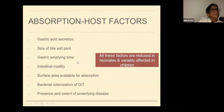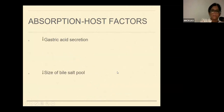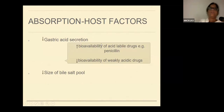The first thing is absorption. It depends on many factors like gastric acid secretion, the bile salt pool, gastric emptying time, intestinal motility, surface area, bacterial colonization, and the presence and extent of the underlying disease. All these factors are reduced or not very well developed in newborns, and in children they are variably affected according to age. For example, in the presence of decreased gastric acid secretion, the bioavailability of acid-labile drugs like penicillin is greater.